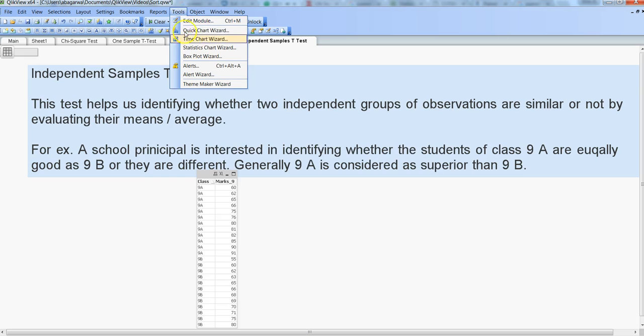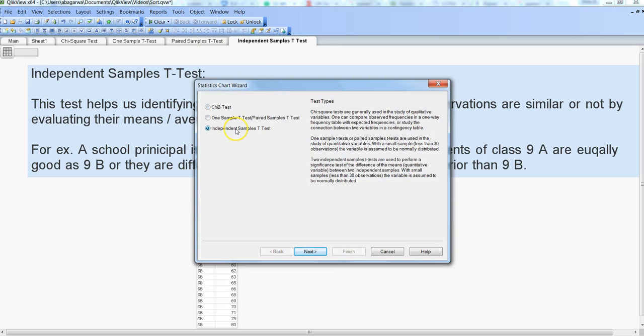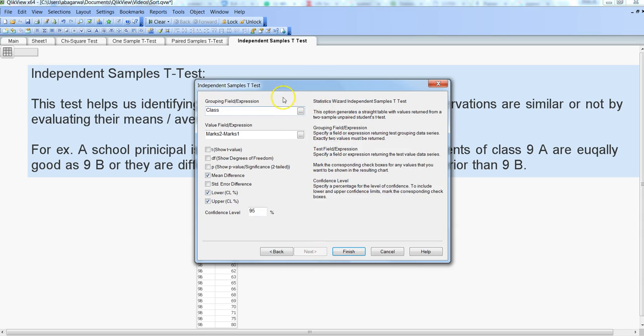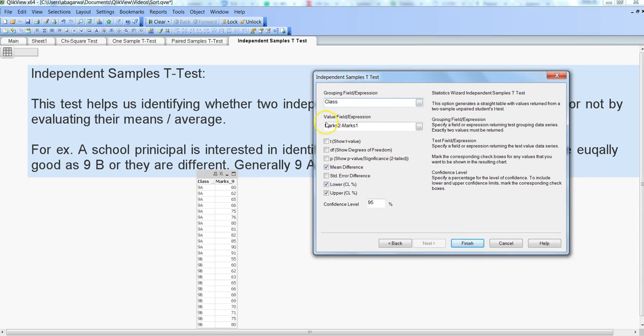Alright, so let's go into tools and do this testing. We want to do an independent sample t-test. Next, we want to specify the class as our grouping field because 9A and 9B are two different groups. Marks_9 is basically marks for 9th class. We want to specify over here, and we want to specify the df, the standard error, everything here in this case, and we want to test this result at 95 degree confidence level. That means at 95 degree confidence level you can say that it is true and there is just 5% error margin.